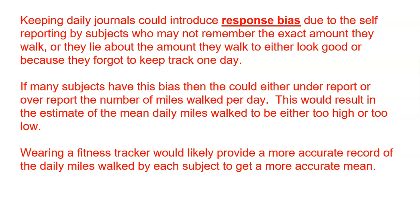Keeping a daily journal could introduce response bias — make sure you answer the question with the type of bias. Response bias is anything that could cause a person's response to be untruthful or biased. The idea here is that subjects are self-reporting and some may not remember the exact amount they walked — maybe they think they walked a mile but actually walked 0.9 miles, or they lie about it to look good or because they forgot. If many subjects have this bias, they could either under-report or over-report the number of miles walked per day, making our data inaccurate. This would result in the estimate of the mean miles walked being either too high or too low.